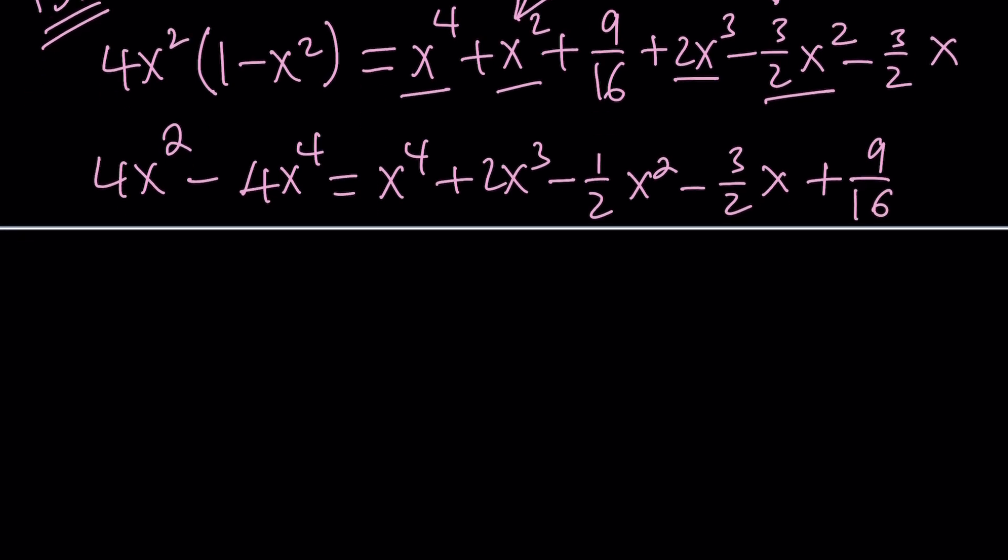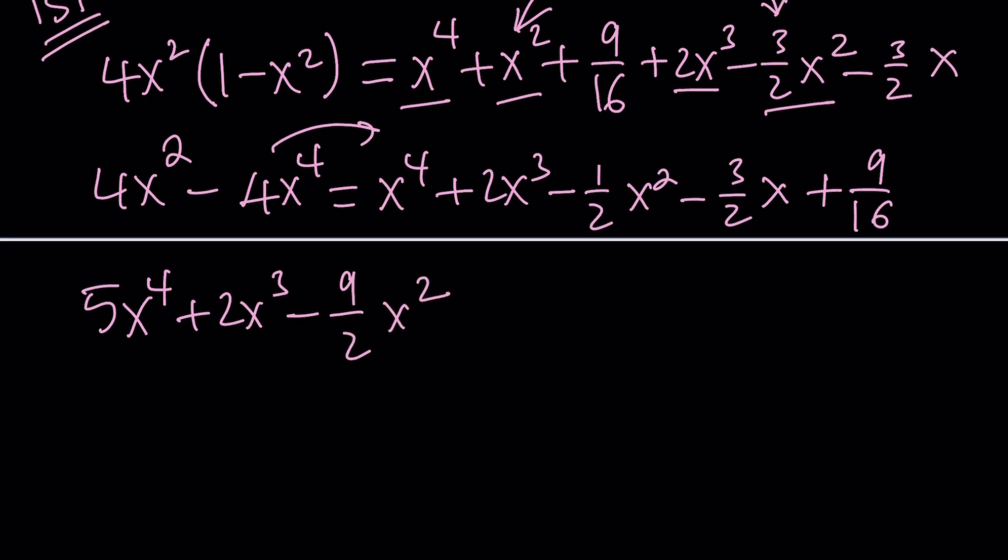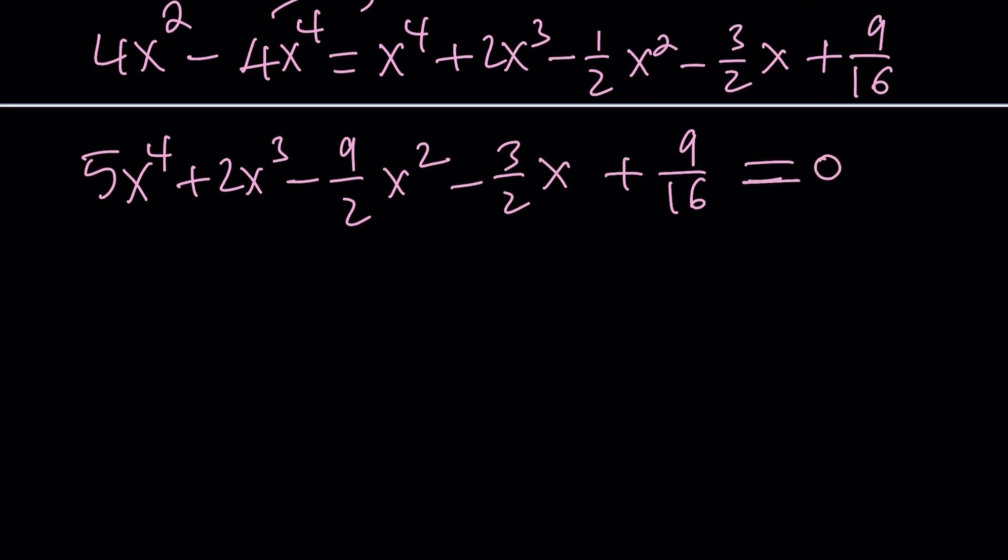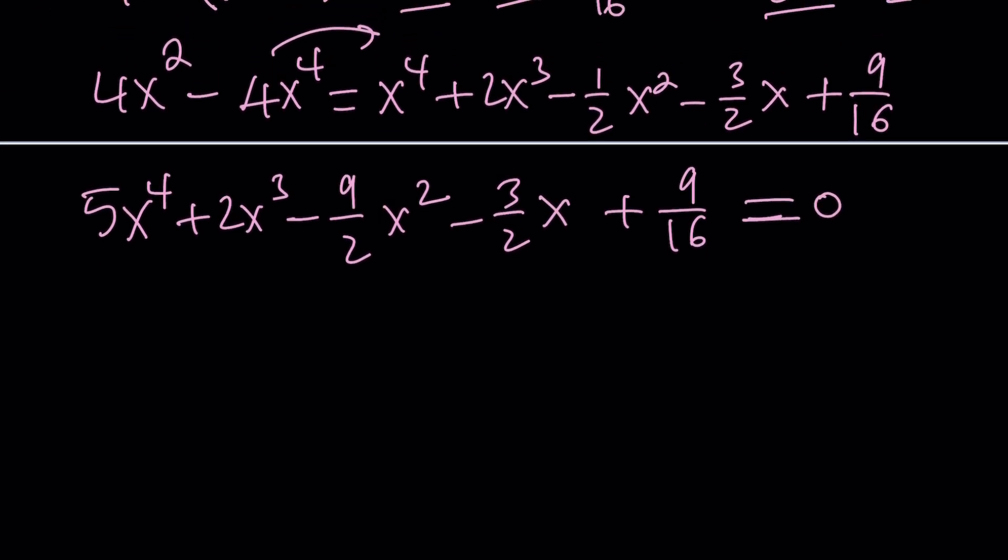Since x to the fourth is more positive on the right-hand side, we can go ahead and put everything on the right-hand side. That's going to give us 5x to the fourth plus 2x cubed minus 9 over 2x squared minus 3 halves of x plus 9 over 16 equals 0. This is like a full quartic, right?